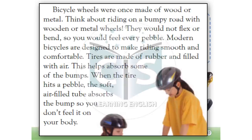Riding the Bumps. Bicycle wheels were once made of wood or metal. Think about riding on a bumpy road with wooden or metal wheels. They would not flex or bend, so you would feel every pebble. Modern bicycles are designed to make riding smooth and comfortable. Tires are made of rubber and filled with air. This helps absorb some of the bumps.